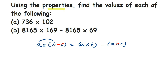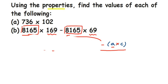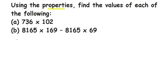Here they have given the right-hand side of the distributive property. The number 8165 is common — it is present on both sides of the minus sign, and we have 169 and 69. Since we have the right-hand side, we need to use the left-hand side to solve. Take the common number outside, and the remaining numbers will be subtracted — like b minus c.